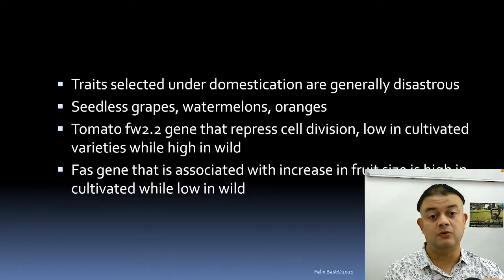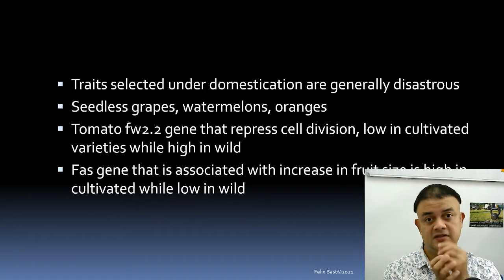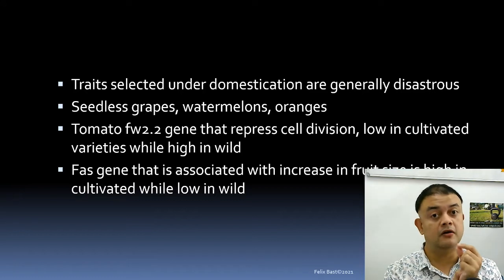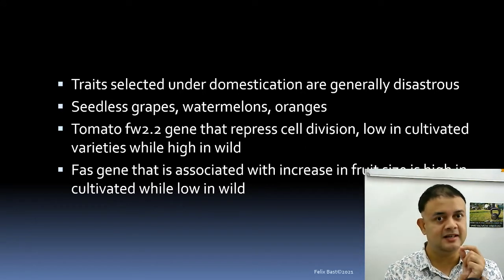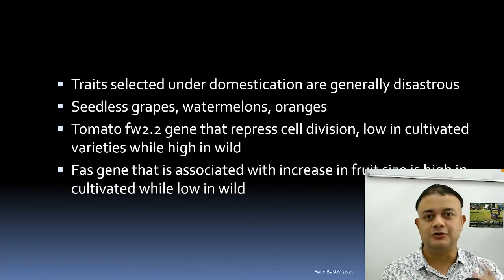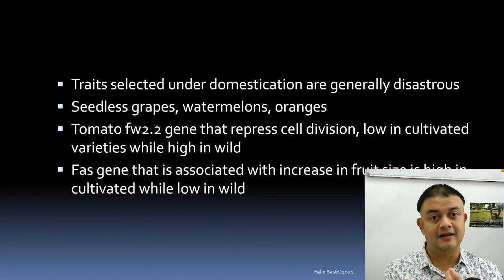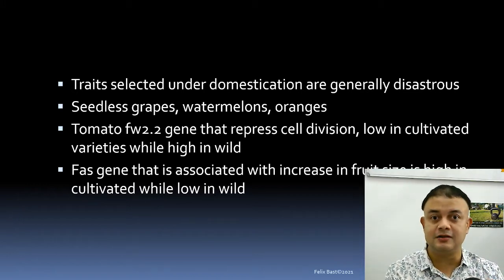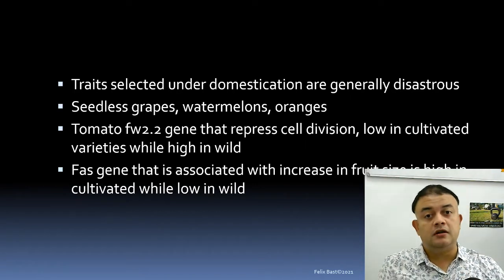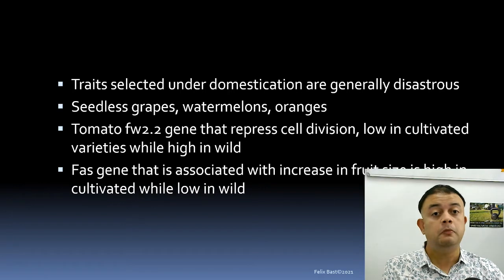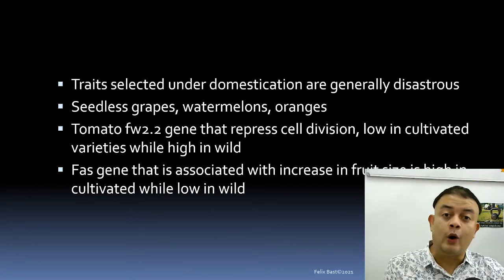We have bred seedless varieties of grapes, watermelons, and oranges. Apples are also not true to their seed — if you plant an apple seed, the resulting tree will not produce the same apple. Interestingly, apple seeds contain cyanide and can be toxic in large quantities. In tomatoes, molecular biologists have located a gene called fw2.2, which represses cell division. This gene is expressed at very low levels in cultivated varieties but at high levels in wild tomatoes.